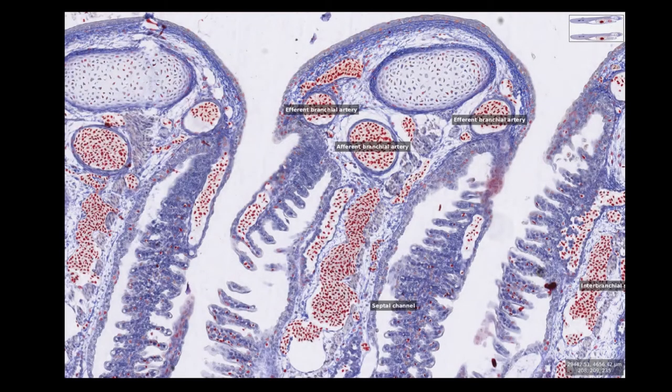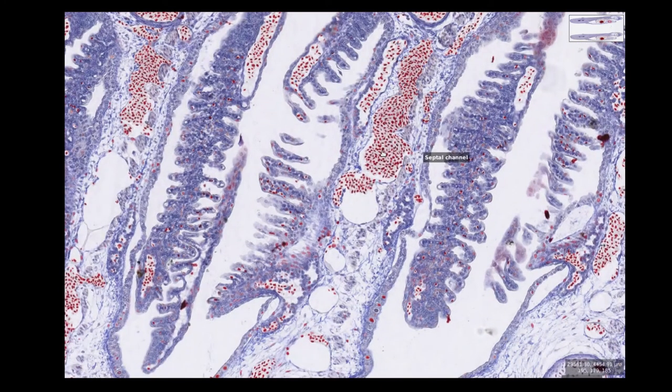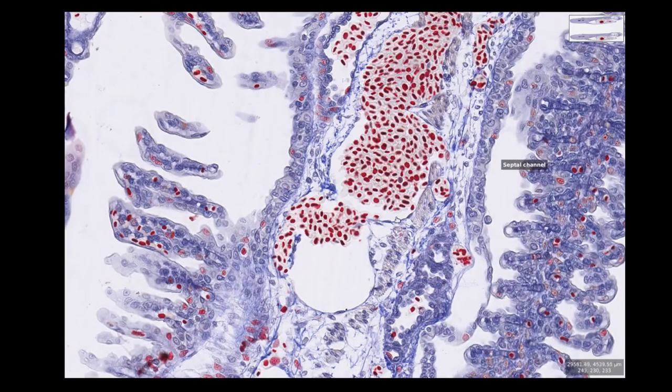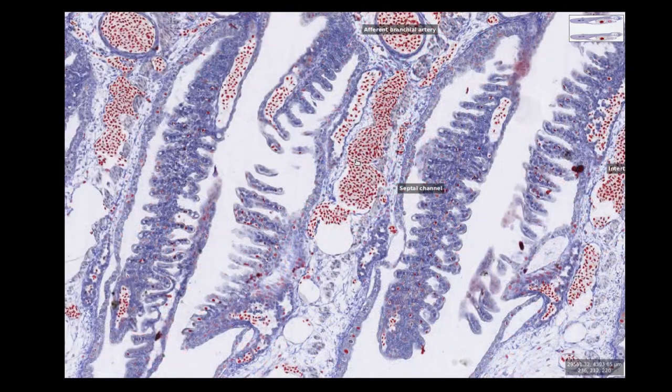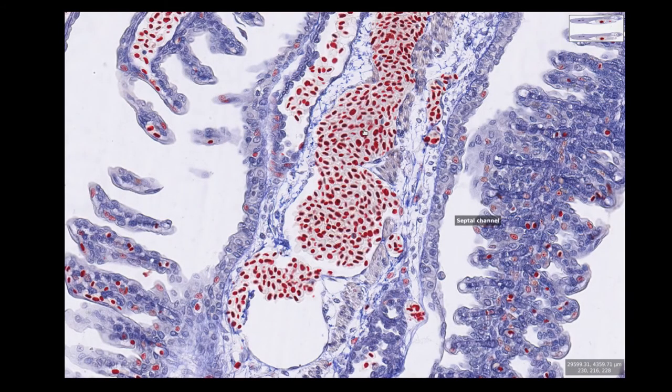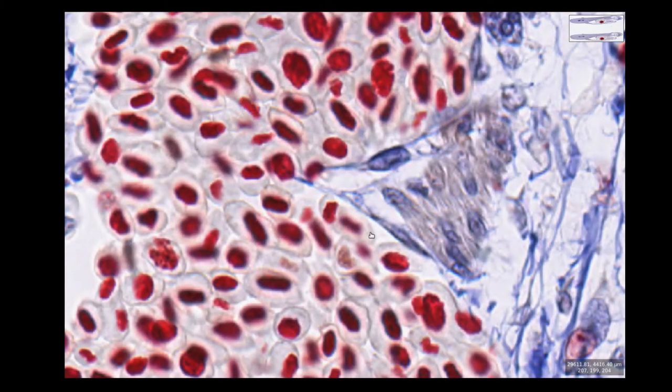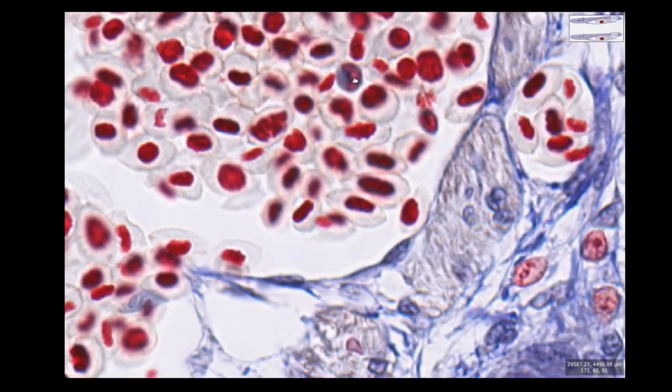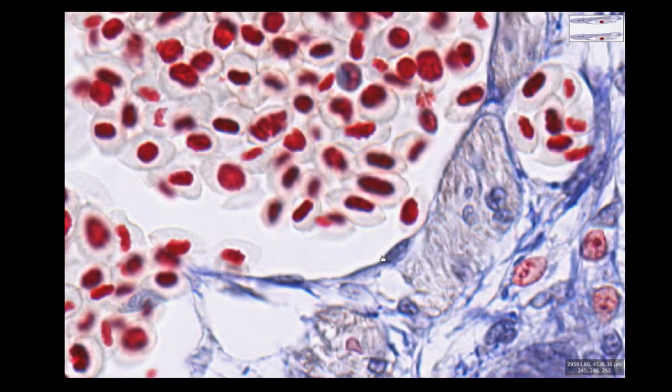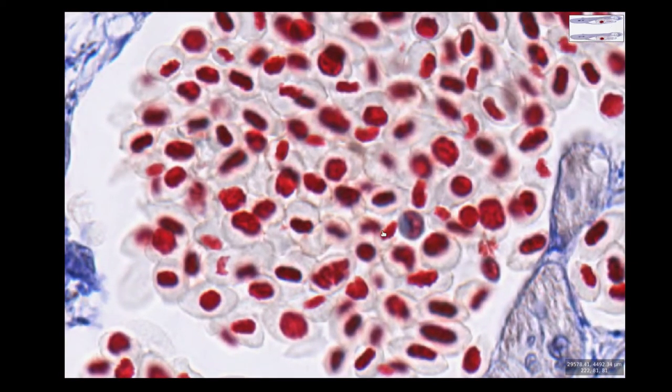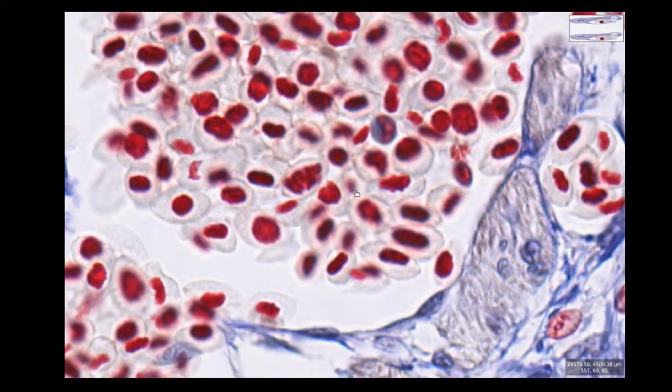These structures can be quite hard to make out on the slides. We can identify the efferent and afferent branchial arteries from their position within the gill arch, but the other blood vessels can be quite difficult to identify. In general, we rely on the presence of red blood cells to be able to find blood vessels. Where you see channels lined by a single layer of cells, such as these ones here with spindle-shaped squashed nuclei, these are blood vessels. The cells lining blood vessels are called endothelium.